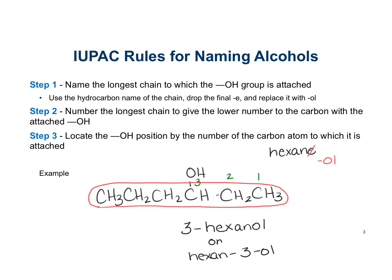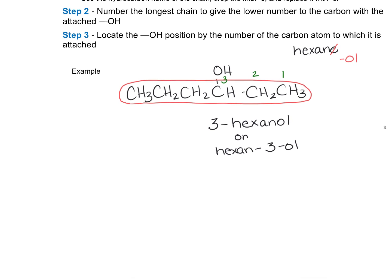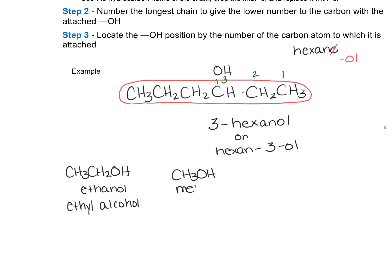These are the IUPAC rules for naming, but some of the simpler alcohols are known by their common names. For example, this is ethanol by IUPAC, but it's also known as ethyl alcohol. Another one is methanol as the IUPAC name, but it's also known as methyl alcohol. Numbers aren't given when you have eth- or meth- because there's only one place that the OH can be.